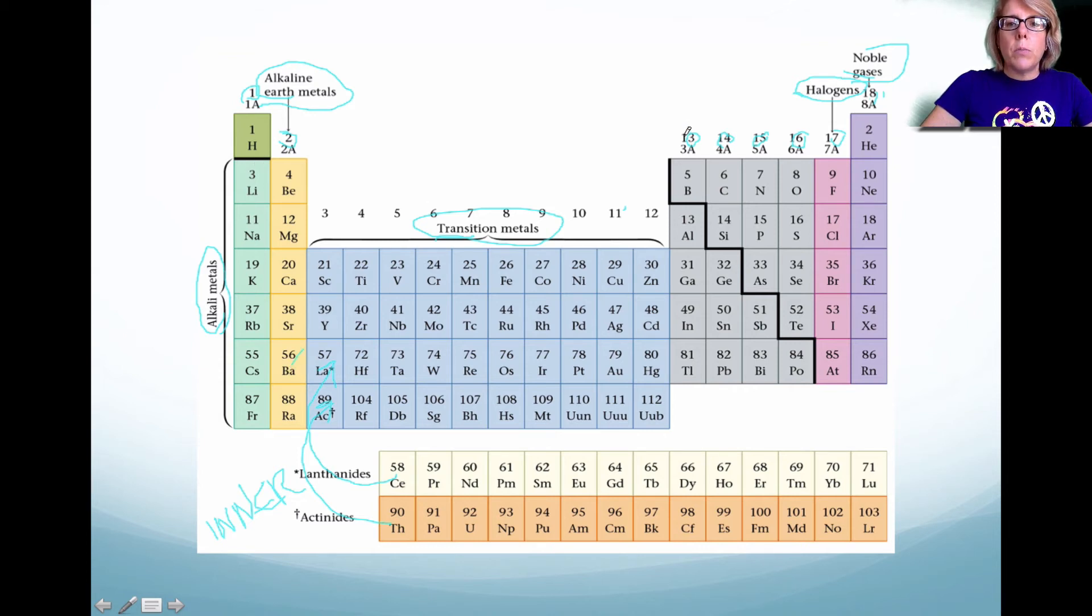And then in group 13, only we're looking at three valence electrons, and then so on. And this is partly the reason why we see a repetition in the chemical and physical properties.